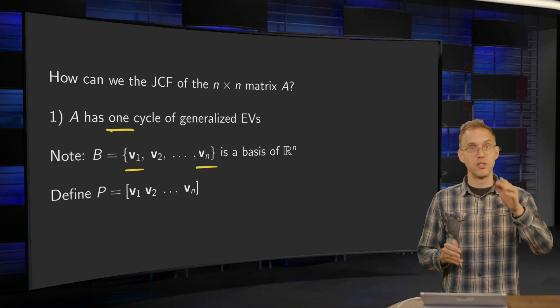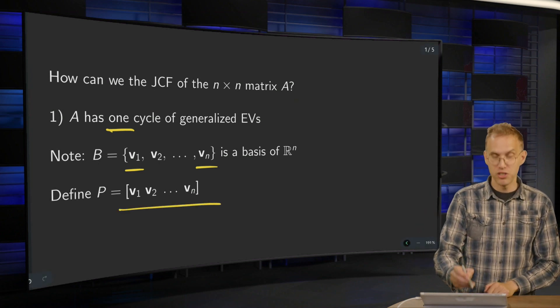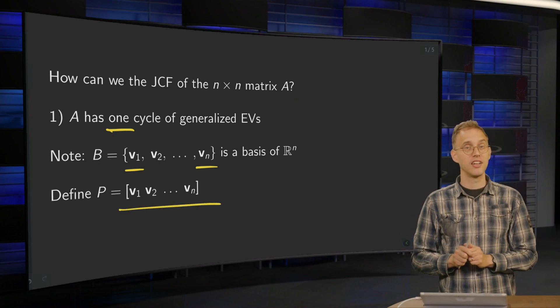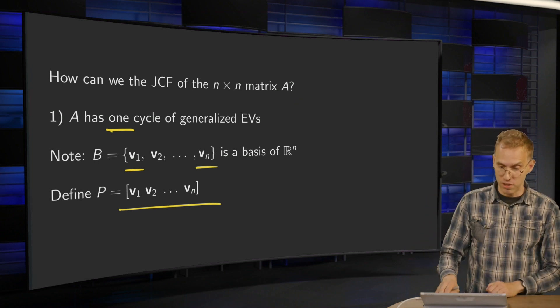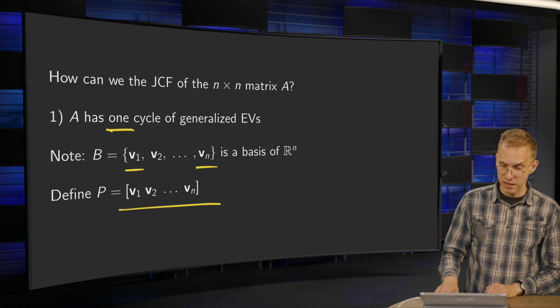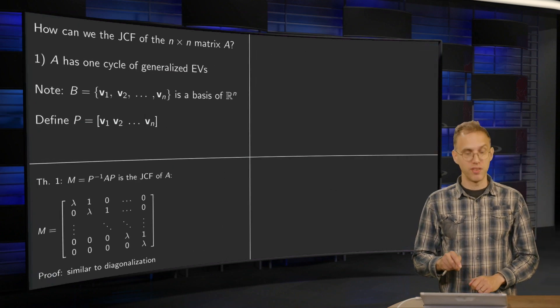Then we can put those generalized eigenvectors in the matrix P, just as you would do for diagonalization. This P is invertible, of course, because V1 up to Vn are independent.